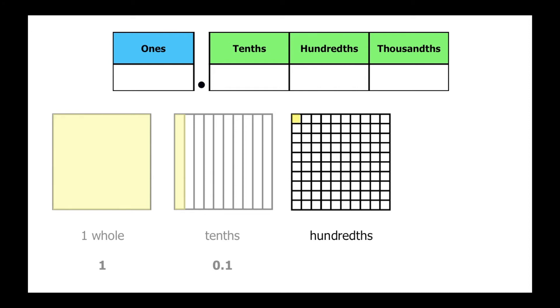When we write its value in the place value chart, again, we do not have a whole, so we'll place a zero in the ones place. We also don't have any tenths, so we'll place a zero in the tenths place. But we do have one hundredth. This is one hundredth.